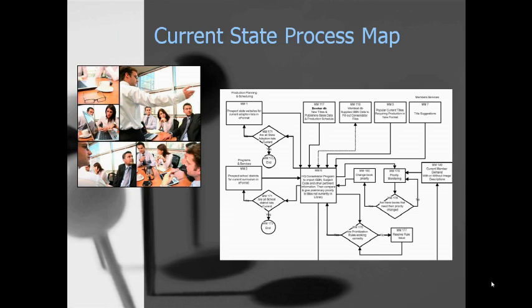Interestingly, these were people that had been working together for years and they knew what their problem was — they always thought it was the other guy causing it. What they started to realize from this current state process map review, with everyone in the same room, was that they were all basically fighting the same problem. From there, we went to what I call the magic wand series.